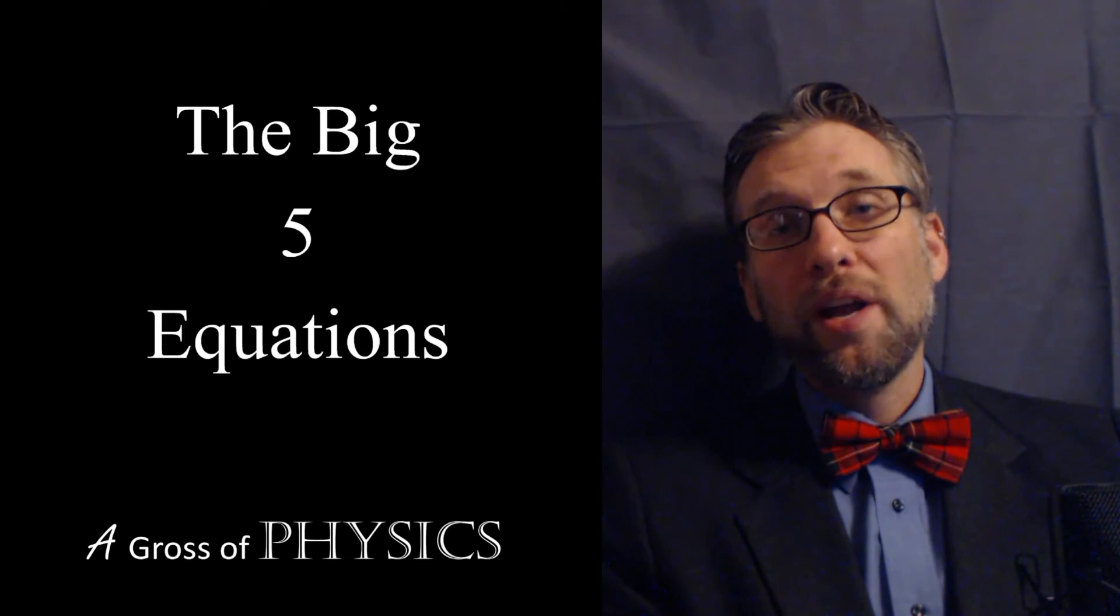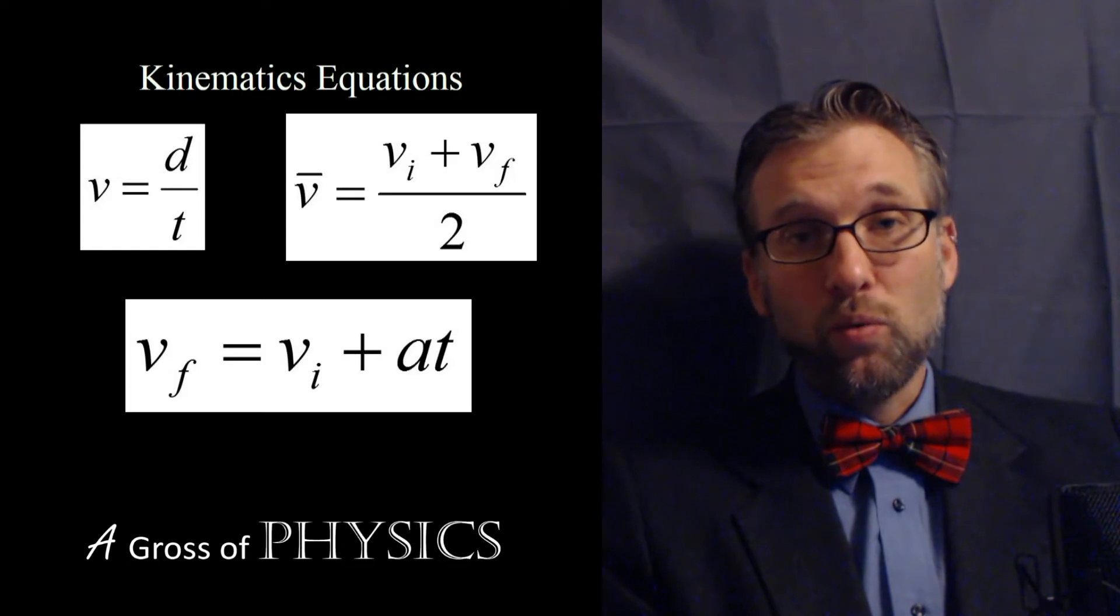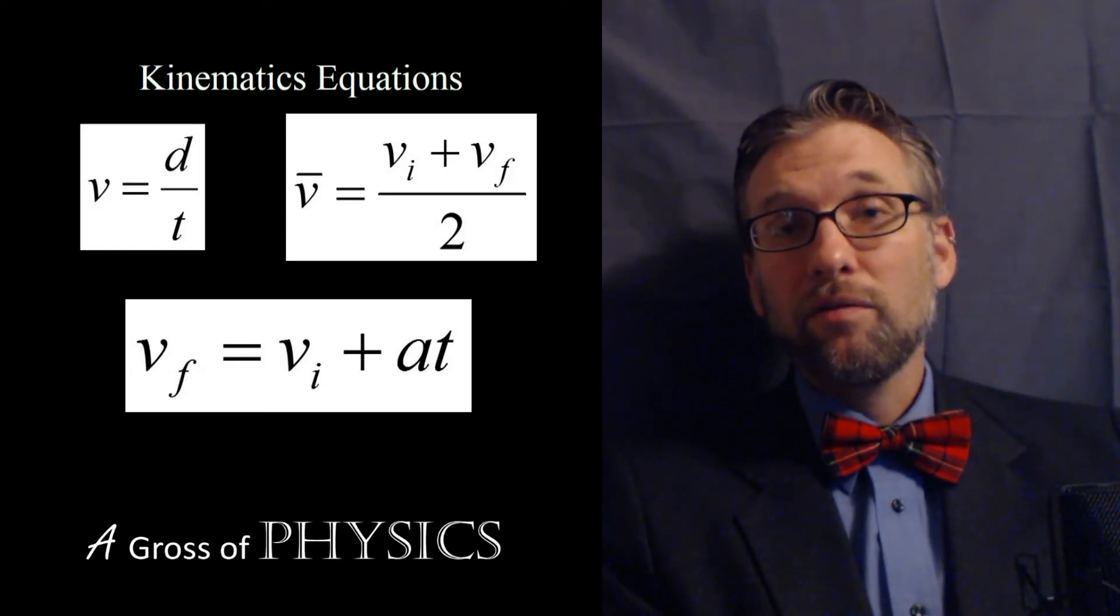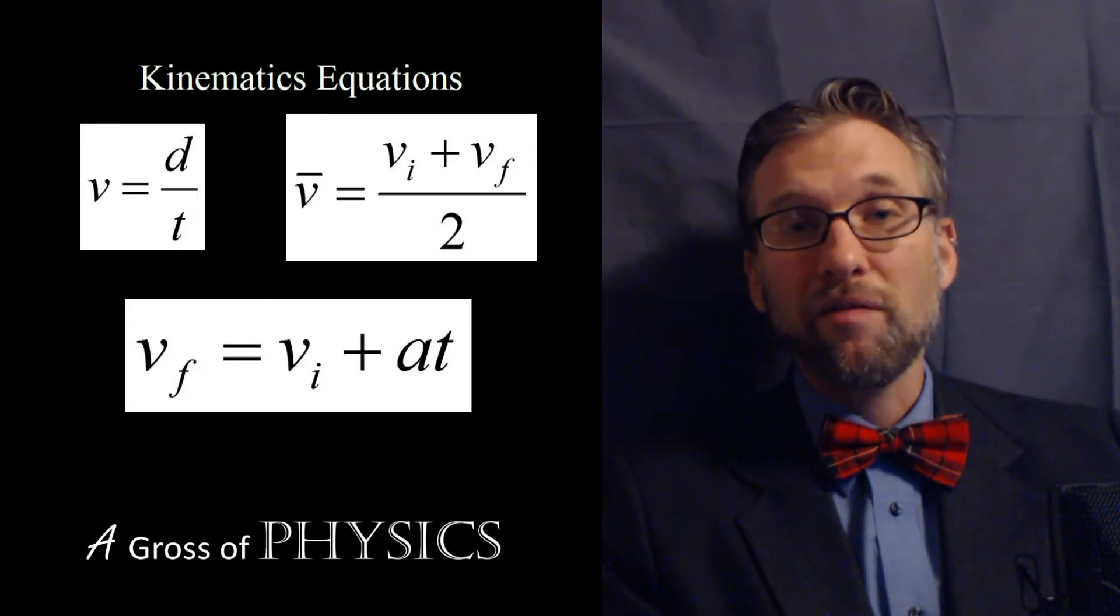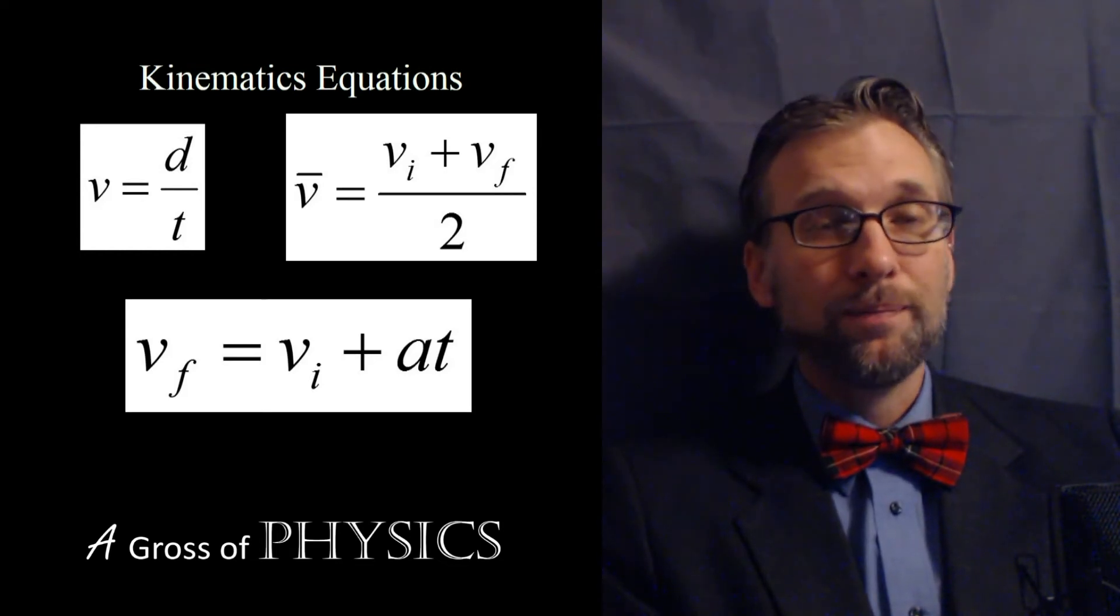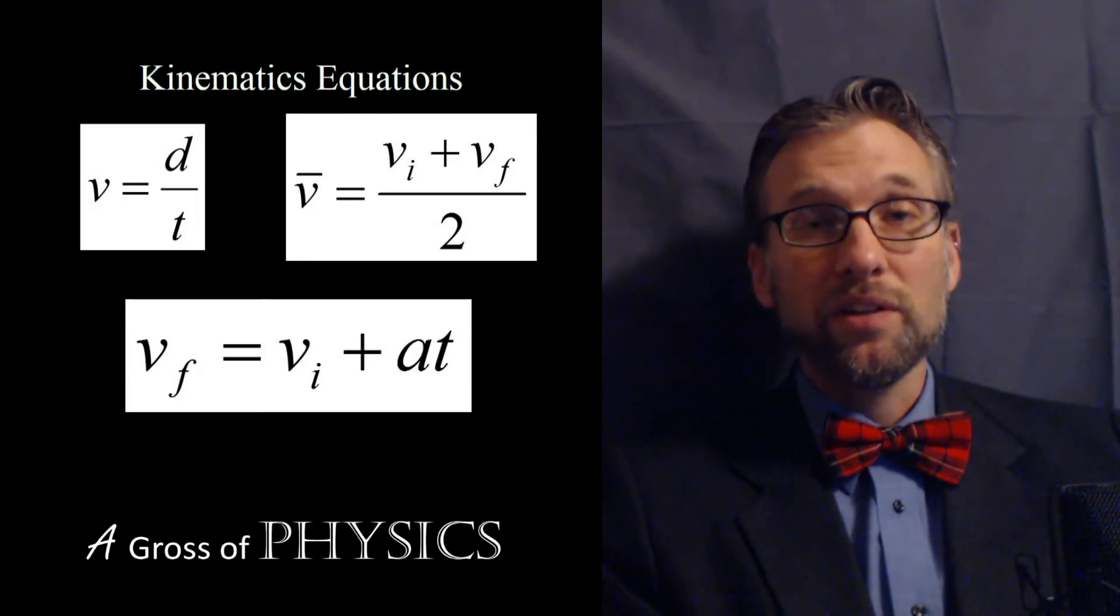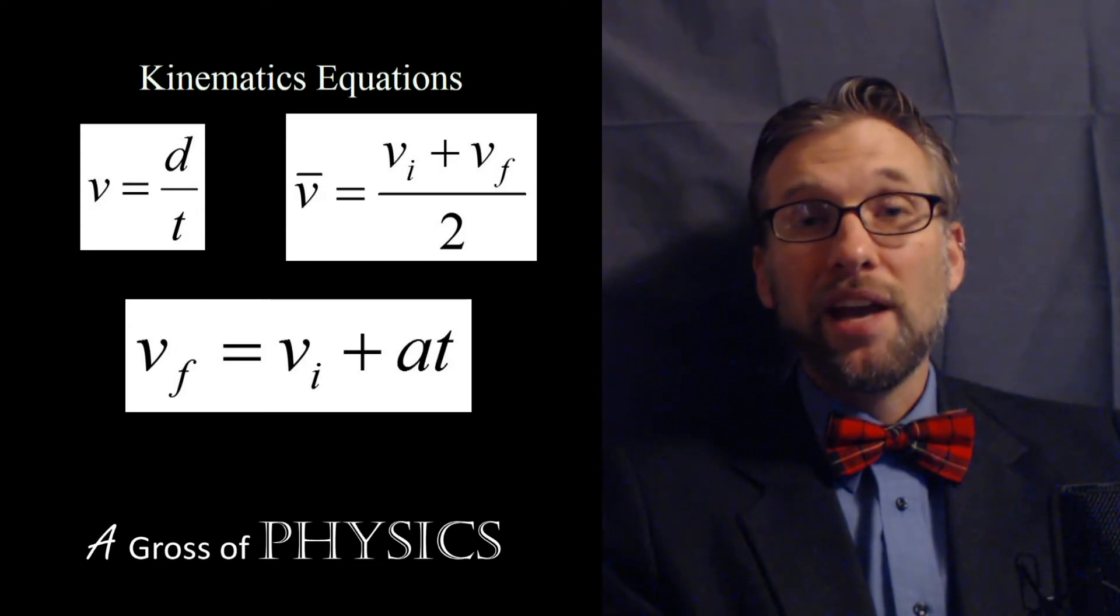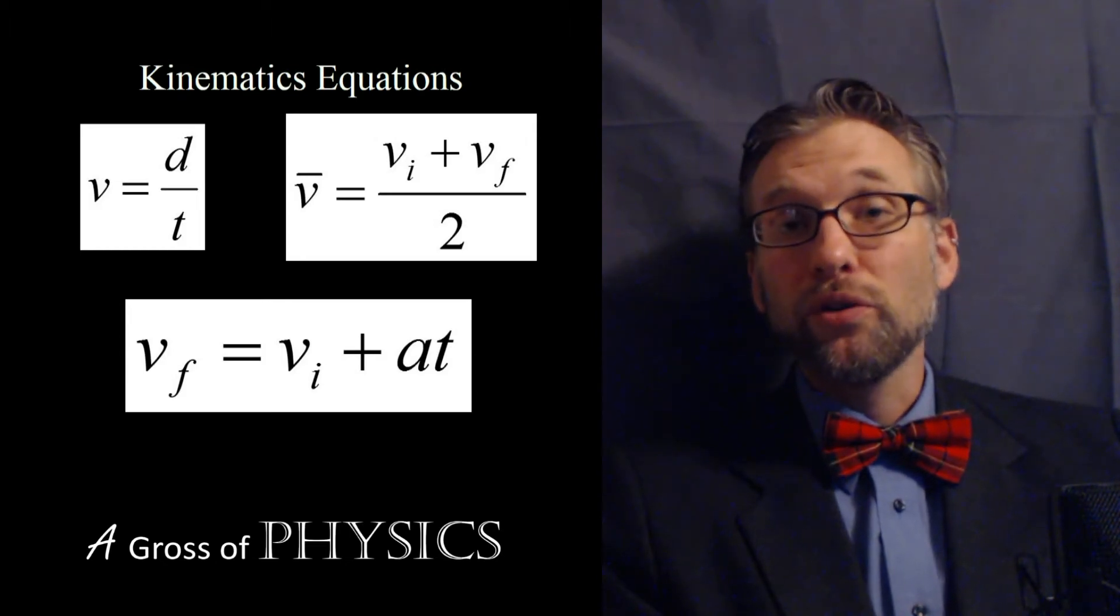We have two equations that are derived from the first three. I like to call them equation one, two, three, four, and five for the big five. Many textbooks discuss the kinematics equations as the big five. Equation one is V equals D over T, equation two is V bar equals VI plus VF over two, equation three is VF equals VI plus AT. Those are our base equations; the other two are derived.